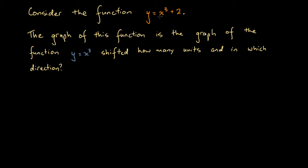Consider the function y equals x cubed plus 2. The graph of this function is the graph of the function y equals x cubed shifted how many units and in which direction? We're told that the graph of this function in orange is a transformation of the graph of this function in blue, and we're asked to figure out what sort of transformation it is.